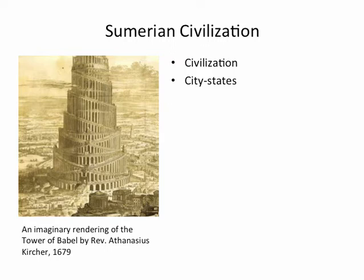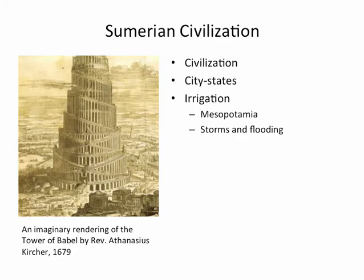Occasionally in Mesopotamian history some great ruler would unite Mesopotamia, but the normal situation was having all of these separate city-states who often were at each other's throats. But the reason why cities developed in Mesopotamia again had to do with agriculture and farming.